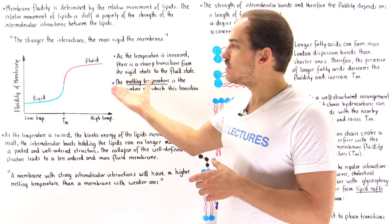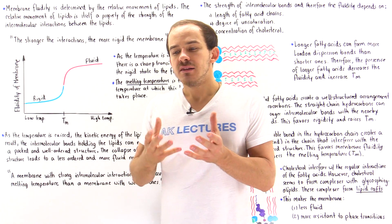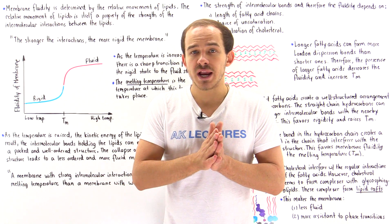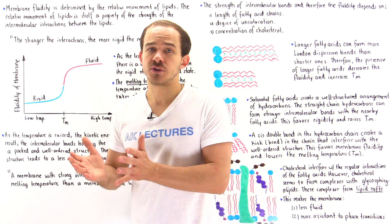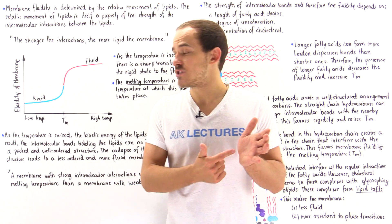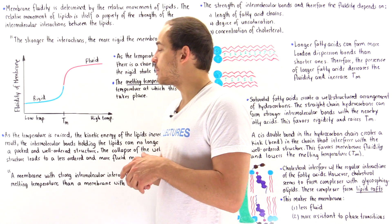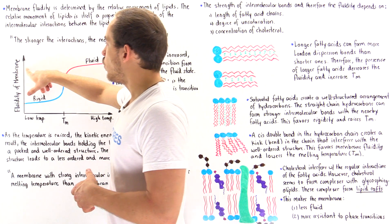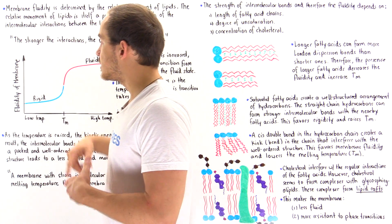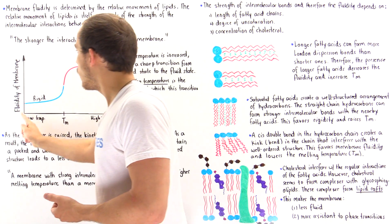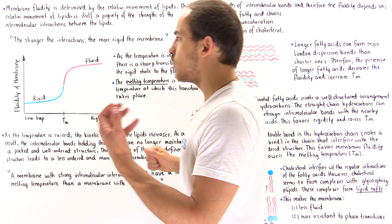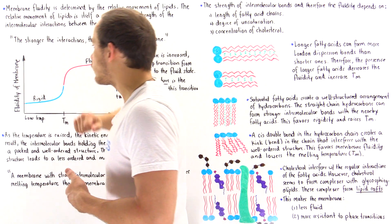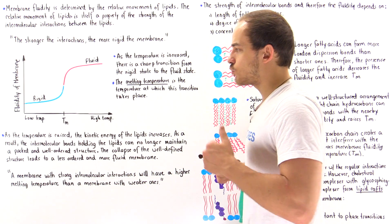Let's look at a graph of what happens to a membrane as we go from a low temperature to a high temperature. The y-axis represents the fluidity of the membrane: higher up means greater fluidity, lower means greater rigidity.